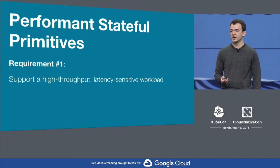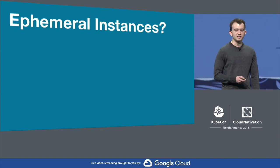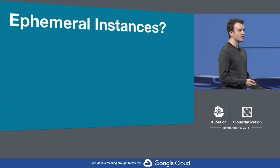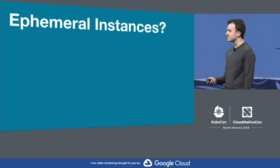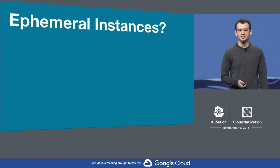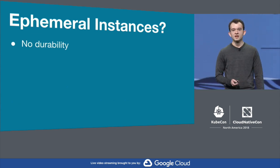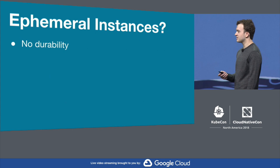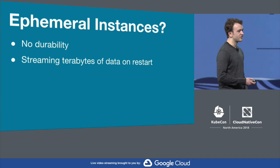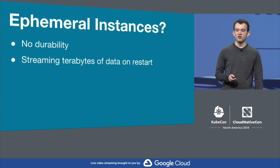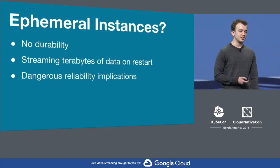To give you a sense of what we were looking for, let's take a look at some ways of managing state in containerized applications. One option would be to just not manage it at all — an M3DB instance's data would live as long as its container. This might technically be fast as we'd have direct access to the host disk, but would otherwise be pretty terrible. There's no durability of the data, meaning when M3DB containers die or are restarted, they would have to stream terabytes of data from their peers — wildly inefficient. On top of this, when M3DB instances are streaming data, they're not available for reads, which would have dangerous reliability implications.